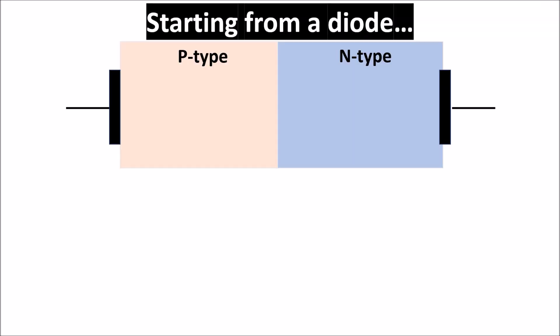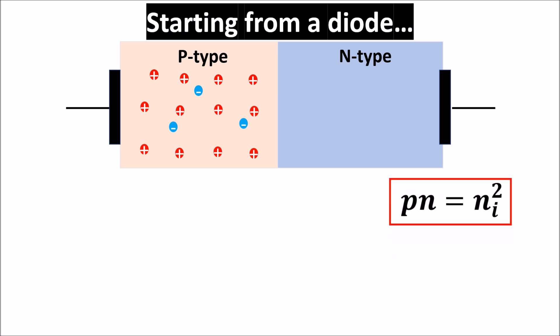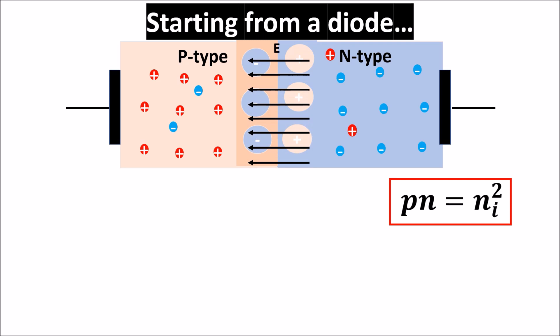We start by reviewing the diode working principle, which we explained in the previous video, and later build a BJT starting from a PN junction. A PN junction shows a large number of majority carriers — holes in the P-type region and a few electrons as minority carriers — where the concentration of majority and minority carriers are related by a standard relation. Similarly for the N-type region. When a PN junction is created, some electrons diffuse into the P-type region and some holes diffuse into the N-type region.